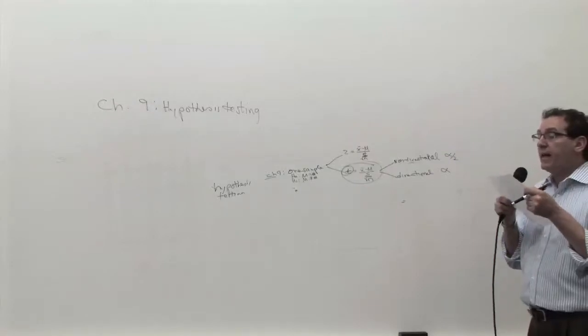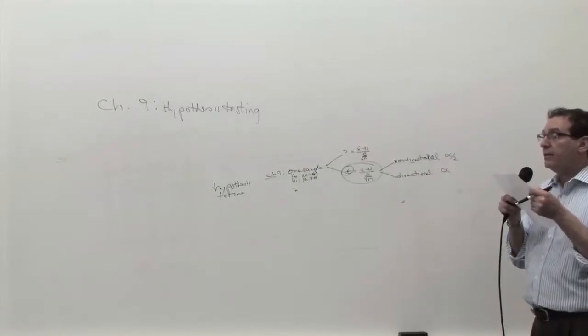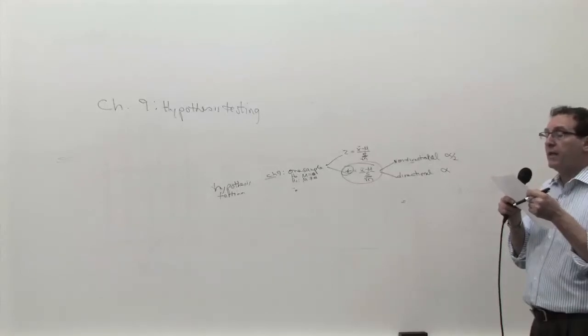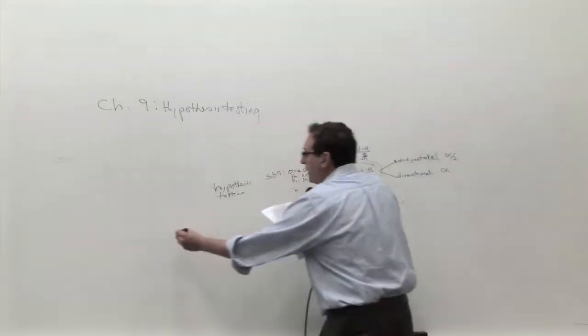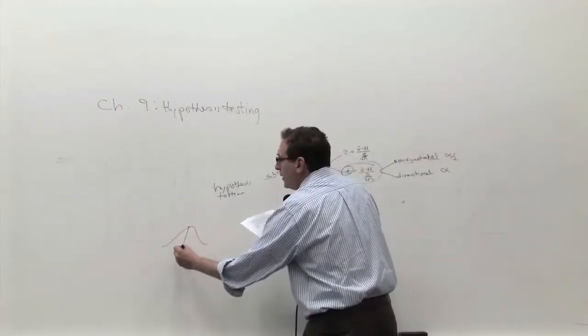A candy company wants packages to contain a mean of 8.17 ounces, so that virtually none of the packages contain less than 8. Let me explain that, because if you tell a machine, when this is a machine, this represents the results of a machine.